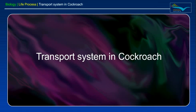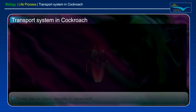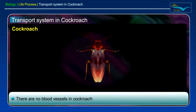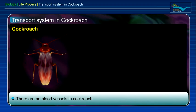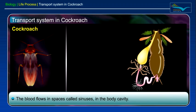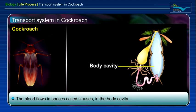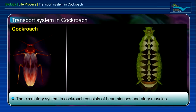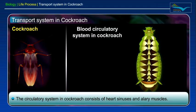There are no blood vessels in cockroach, and the blood flows in spaces called sinuses in the body cavity. So, it is an open type of circulatory system. The circulatory system in cockroach consists of heart, sinuses and artery muscles.